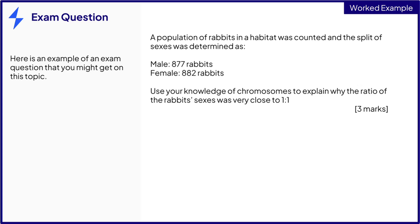Here we can see an exam-style question. The population of rabbits in a habitat was counted, and the split of sexes was determined as males: 877 rabbits, females: 882 rabbits. Use your knowledge of chromosomes to explain why the ratio of the rabbit sexes was very close to 1 to 1. The number of males and females are very similar. The command word is 'explain,' so you need to give the science behind your observations. The question is worth 3 marks, so a reasonable amount of detail is required with 3 linking statements.